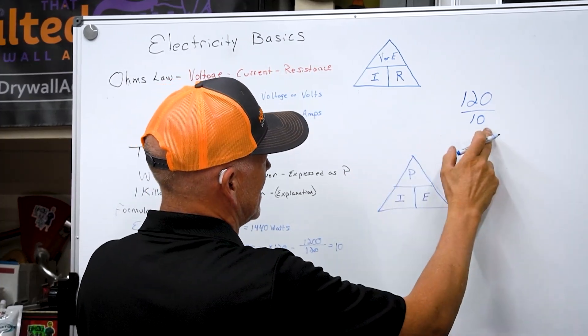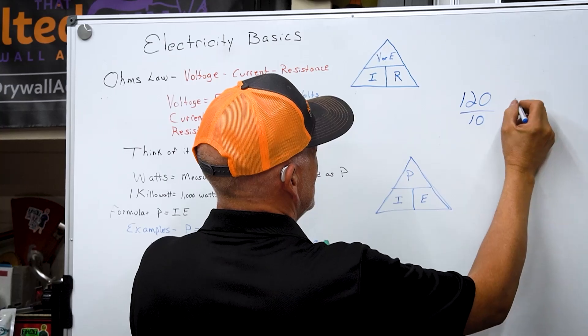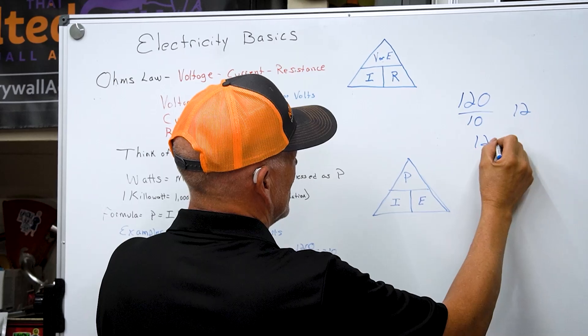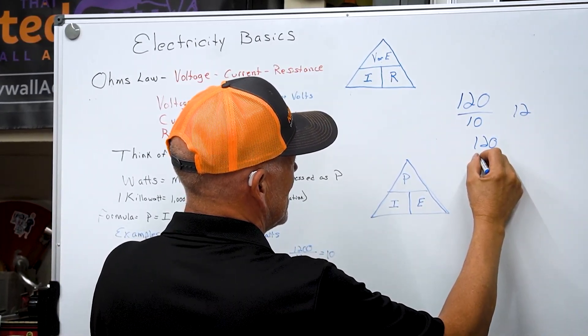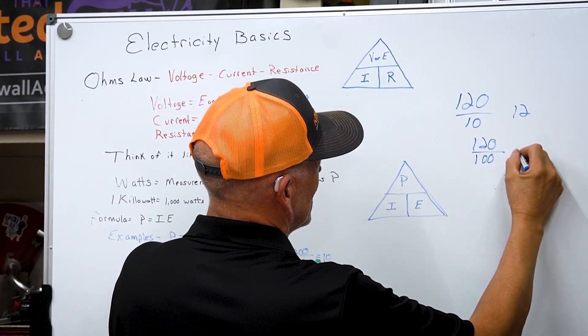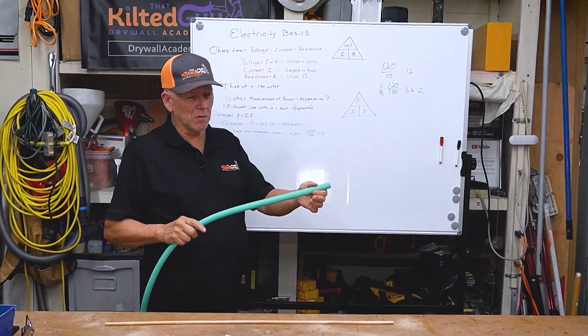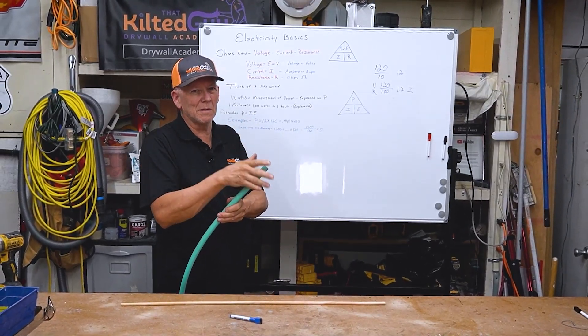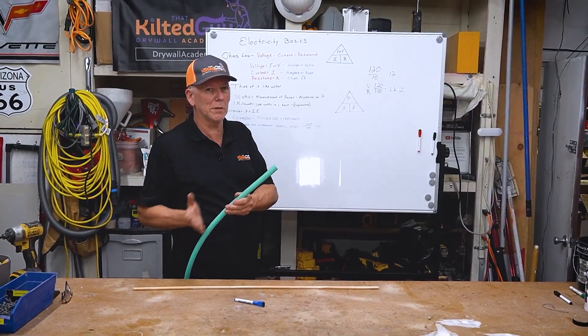Because you increase the resistance. The resistance got higher, the voltage went up. It's always each one of those affects the other. So let's say you have 120 volts and you had very little resistance, so 10 ohms of resistance. And in water it'd be different, but just think of it the same way. You would have 12 amps.